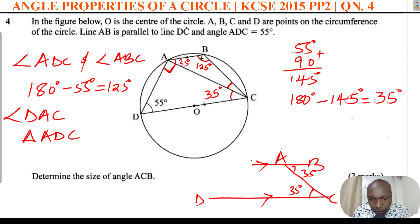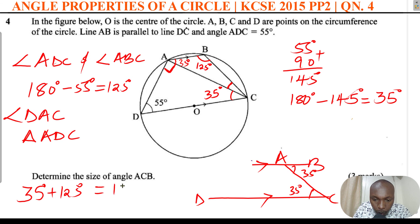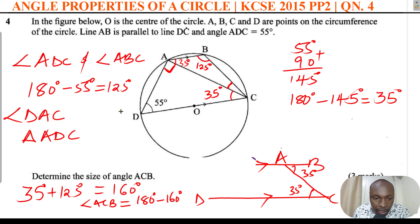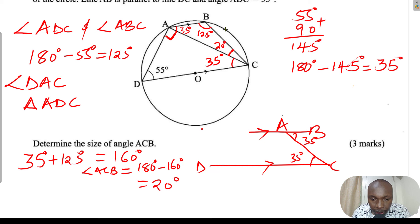Now, considering triangle ABC, the sum of angles must equal 180 degrees. We have 35 degrees plus 125 degrees, which gives 160 degrees. Therefore, the required angle ACB equals 180 minus 160, which gives 20 degrees. So angle ACB is 20 degrees.